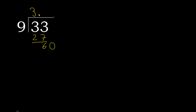9 multiplied by 6. 9 multiplied by 7 is greater, so multiplied by 6 is 54. Subtract. Complete. Point is here, 6d.